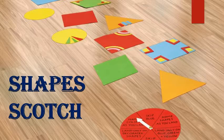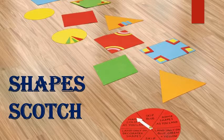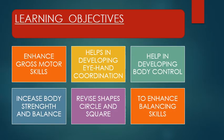The name of our game is Shapes Scotch. Learning objectives for this activity are enhance gross motor skills, increase body strength and balance, helps in developing eye hand coordination, revise shapes circle and square, and helps in developing body control to enhance balancing skills.